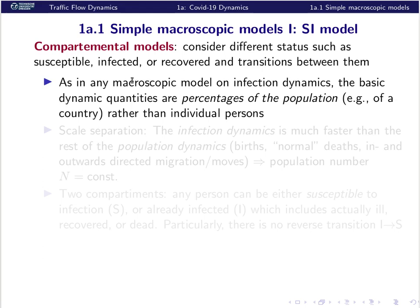Let's get to our models and their analysis. The first model is a simple macroscopic model called the SI model, in the class of so-called compartmental models. All people have different statuses - in the simplest case, just two: S for susceptible, meaning susceptible to infection, and I for already infected. As in any macroscopic model, we use variables in terms of percentages or fractions of a population, because then it's easiest to model how with more immunity the infection dynamics gets weaker.